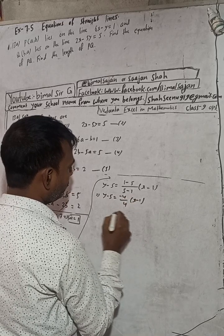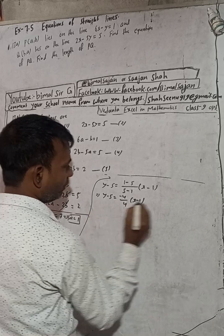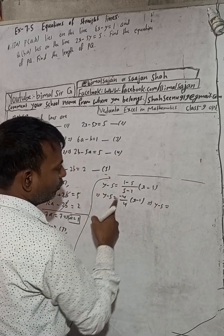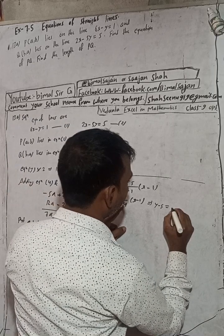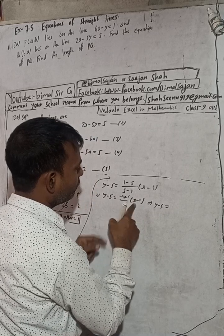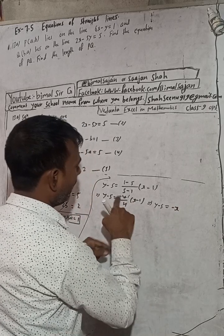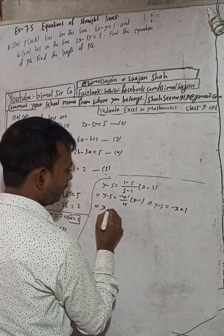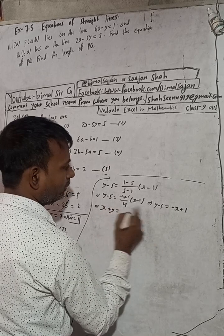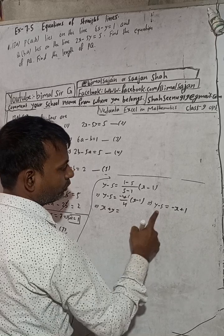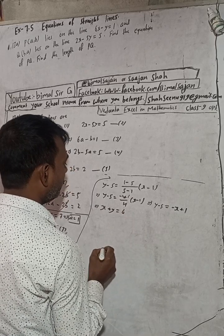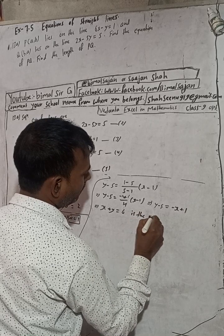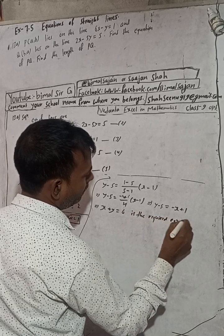Expanding: y minus 5 equals minus x plus 1. Rearranging, bringing all terms to one side: x plus y equals 1 plus 5 equals 6. Therefore the required equation of PQ is x plus y equals 6.